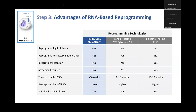The reason ReproCell prefers its reprogramming method compared to Sendai or episomal methods is that it's quick, stable, many lines have been made reliably, kits are available, and the licensing process is straightforward — meaning all documentation is available in one place. With Sendai virus, the risk of a certain percentage of persistence creates uncertainty. Episomal plasmids work well and are consistent, though integration can occur at a low frequency, requiring additional tests beyond what an RNA-based method would need.